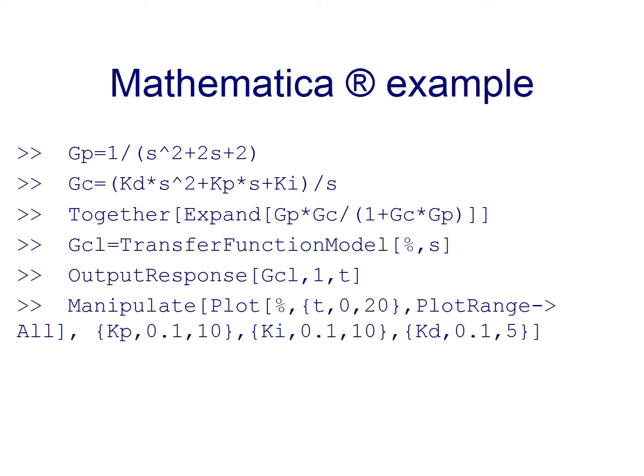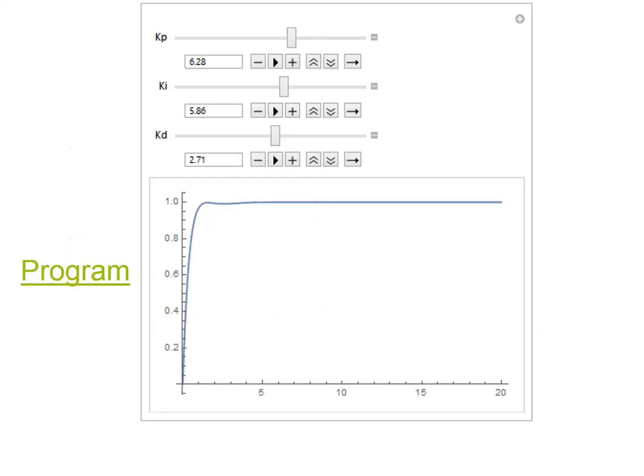Once you have written all this in Mathematica, you're going to have this block. So as you can see, we have this slider for Kp, another slider for Ki and another one for Kd. You're going to be able to change these sliders in order to change each one of the parameters that we have.